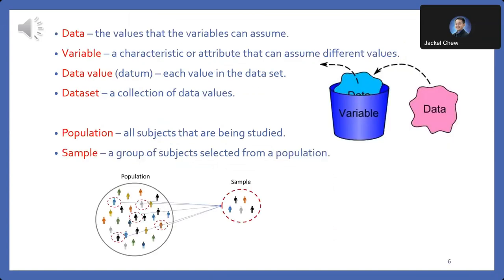Let's start by clarifying some key terms. Data represents the values that variables can assume. These values can be numerical or categorical, forming the basis of our analysis. Variables are characteristics or attributes that can take on different values. They are the building blocks of data analysis, providing insights into various phenomena.